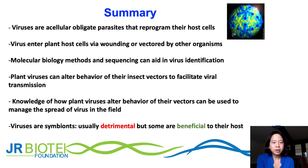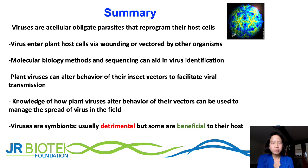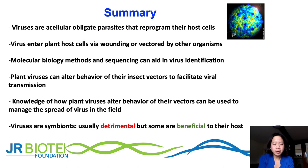To wrap up: viruses are obligate parasites that reprogram their host cells. To enter the plant cell, a virus needs to be vectored by insects or introduced via mechanical wounding. Molecular biology can aid virus identification, but one needs certain knowledge of the virus — whether it is DNA or RNA — to guide identification methods. Plant viruses can alter the behavior of their insect vectors to facilitate transmission, which is very useful to know for managing virus spread in the field. Viruses are symbionts that are usually detrimental, but some can actually be beneficial to their host.